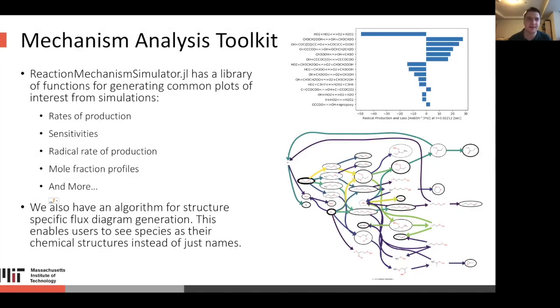Now let's talk about some of RMS's more unique tools. We've put a lot of effort into building a mechanism analysis toolkit in order to make users' lives easier, and in general facilitate and make it easier to analyze these mechanisms that can be quite complicated and quite hard to deal with. We have a library of functions for generating common plots of interest from these simulations, rates of production, sensitivities, radical rate of production, mole fraction profiles, and more. We also have an algorithm for structure-specific flux diagram generation, which is very valuable and convenient. This enables users to see the species as what they are instead of just as their names, see them as their chemical structures, which is really handy because when you have 443 species, it's really hard to keep 443 names straight.